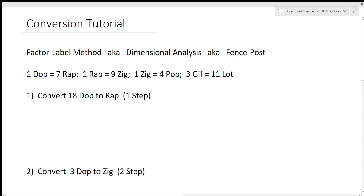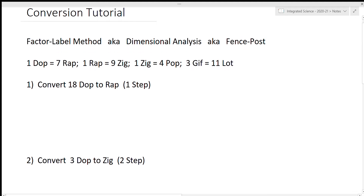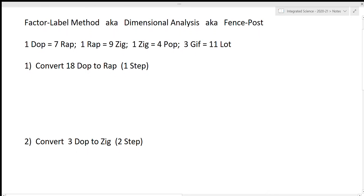I have some examples here to walk you through our method for conversions. This is known as the factor label method, the dimensional analysis method, or as I like to refer to it, the fence post method. We've watched some videos and gotten some practice, but I wanted to give you extra practice and set up this tutorial to solve different types. If you are not converting using one of these methods — they are all really the same type — you're making your life more difficult.